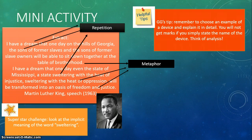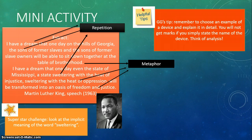I also have another tip. Remember to choose an example of a device and explain it in detail. For example, 'sweltering' — I might say that's emotive language, because you can feel the boiling and roasting happening. Remember, you will not get marks if you just state the name of the device, for example 'a metaphor is being used.' You're not going to get those marks. Think about the analysis, because it's analysis that will get you the marks. Mention the device, but then explain what it might mean.